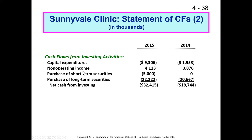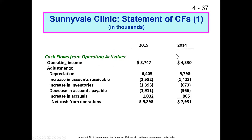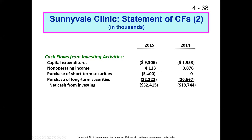Sunnyvale also had non-operating income — some donations and some investment income. Since we used operating income as our starting point, and operating income does not include non-operating income, the non-operating income — donations and investment income — represents an actual increase in cash. Someone wrote a check to Sunnyvale, and their investments paid cash income to the organization, so non-operating income in this case increases the cash balance.